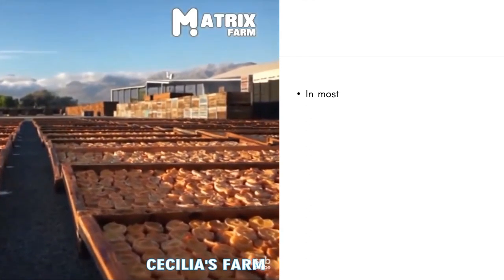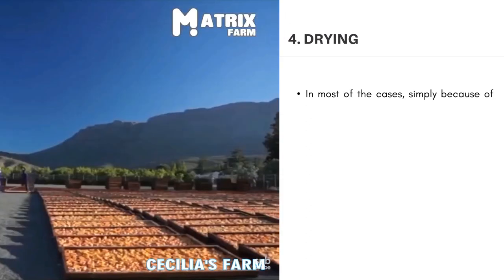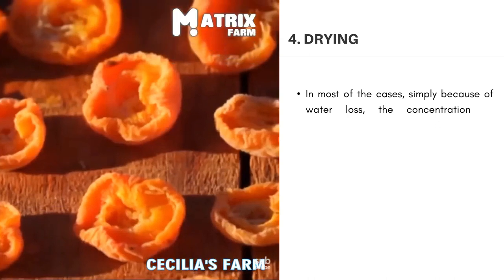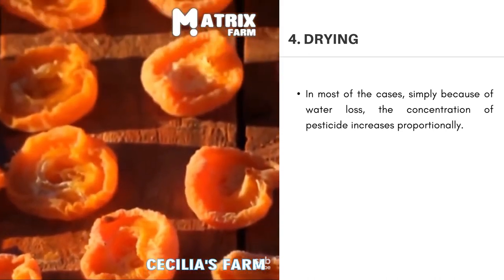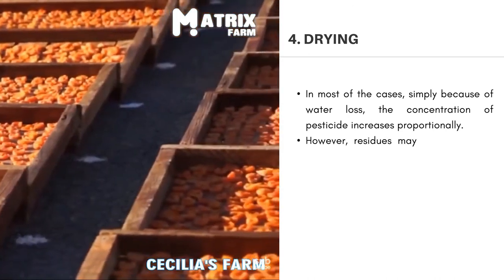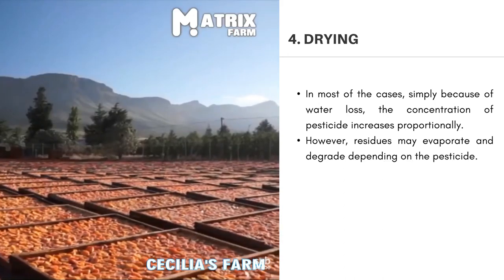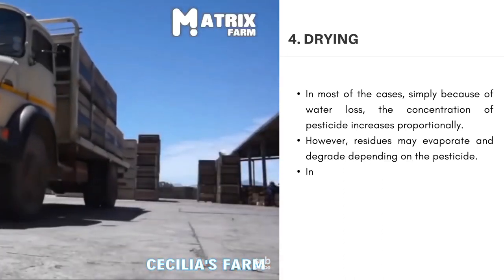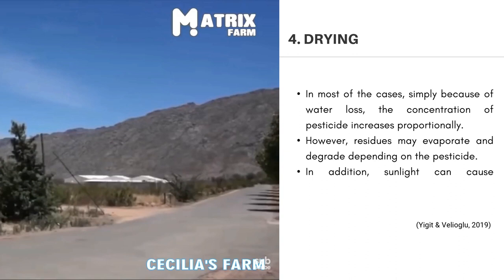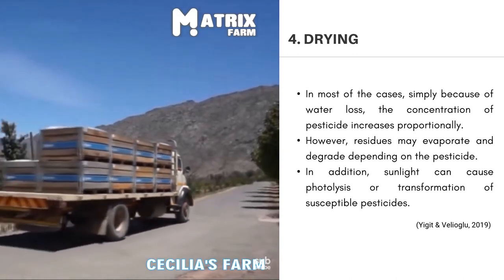Fourth, drying. In most cases, simply because of water loss, the concentration of the pesticide increases proportionally. However, residues may evaporate and degrade depending on the pesticide. In addition, sunlight can cause photolysis or transformation of susceptible pesticides.